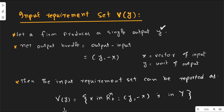Rather, it is a vector of factor inputs such as land, labor, capital, etc. Moreover, we can also use some other goods to produce this good. For example, an automobile company uses tires produced by another company to produce a car.